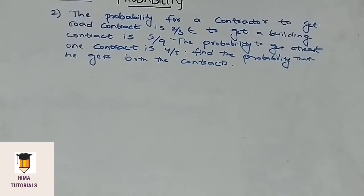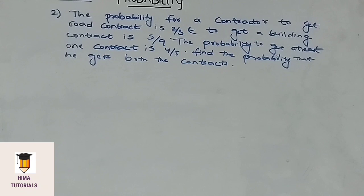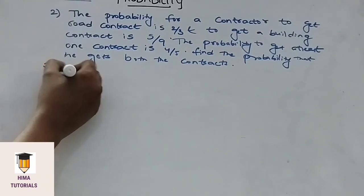Coming to the next question. The probability for a contractor to get a road contract is 2 by 3, and to get a building contract is 5 by 9. The probability to get at least one contract is 4 by 5. Find the probability that he gets both the contracts.